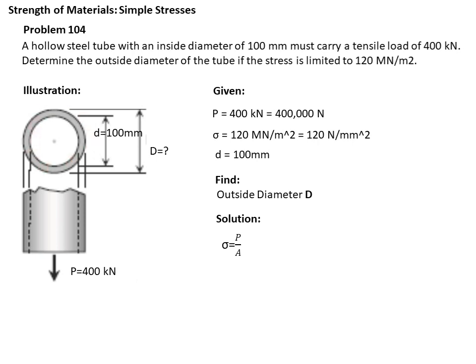And we do not have yet the gross area, the cross-sectional area of the hollow steel tube. Since it is a hollow steel tube, the cross-sectional area should be the area of the outside tube, which is what the problem is asking for, less the area of the circular hollow tube with the diameter of 100 mm.